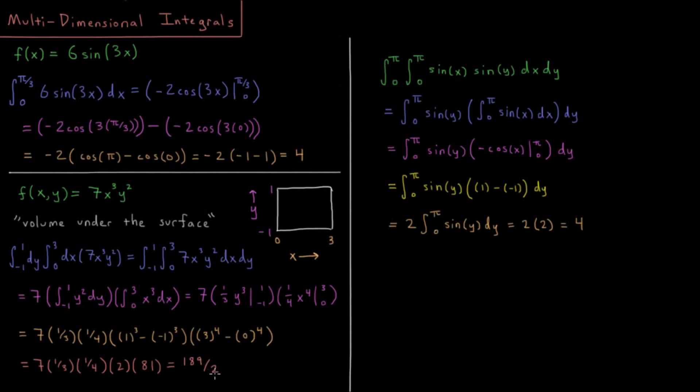Simplifying everything gives a final result of 189/2, which is the volume under this surface — where the function forms a surface above or below the xy-plane.